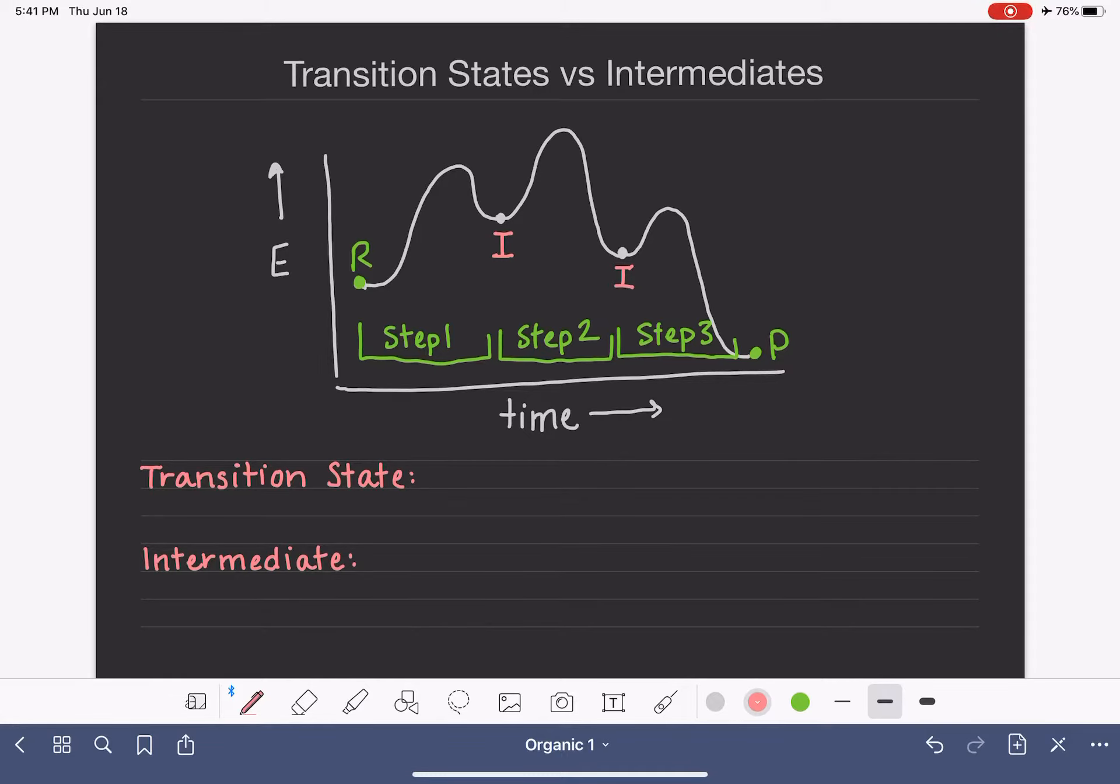Intermediates are usually pretty stable, so we're going to say that they are sort of stable. I kind of hesitate to call them molecules. Let's call them compounds because sometimes they're charged. So they are sort of stable compounds. Sometimes they can be isolated. Sometimes isolatable.